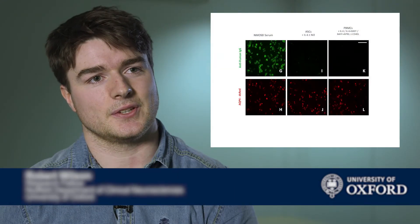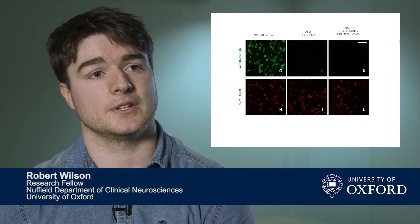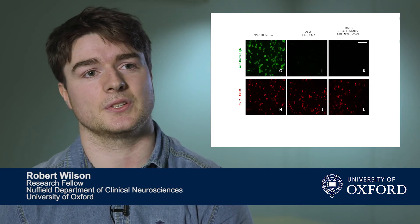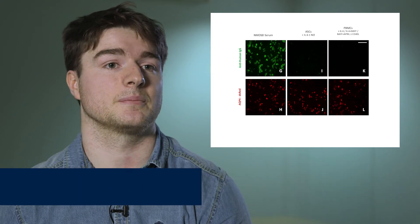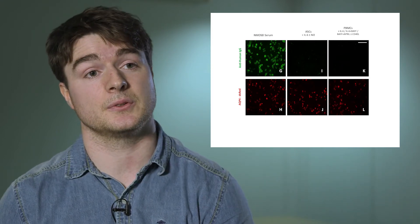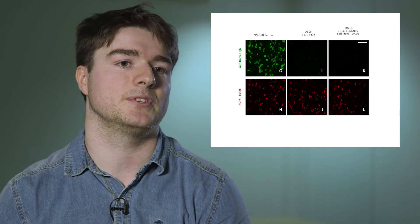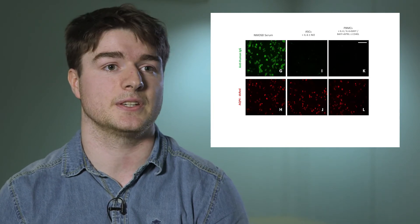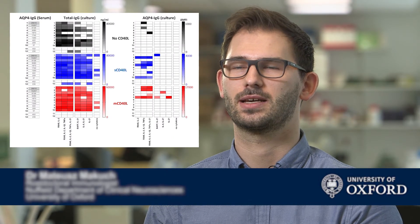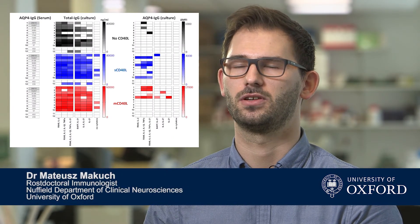Antibody secreting cells were sorted from total peripheral blood mononuclear cells and cultured in conditions shown to maintain antibody secreting cells, such as IL-6. While we were able to detect considerable total antibody in these cultures, we were not able to detect any aquaporin-4 specific antibodies. PBMCs from all patients except for the two treated with rituximab produced IgG in culture.